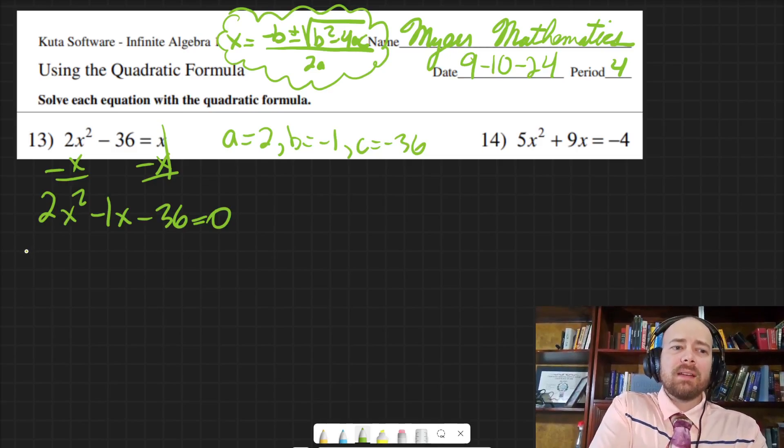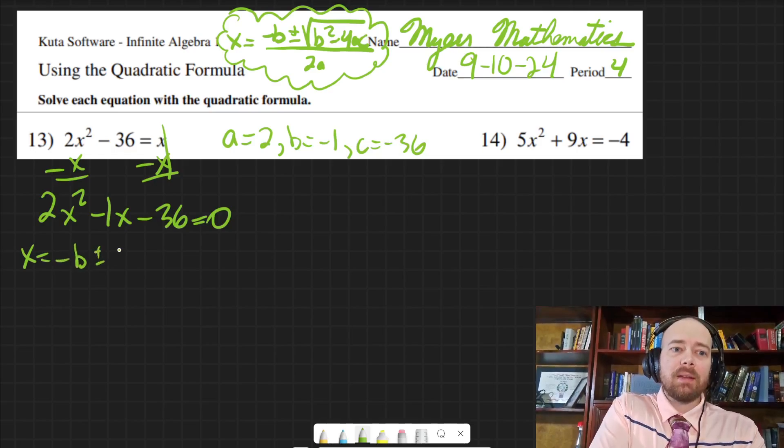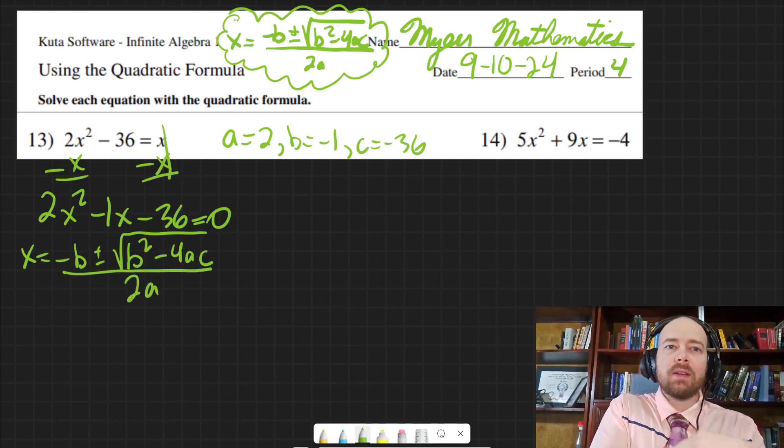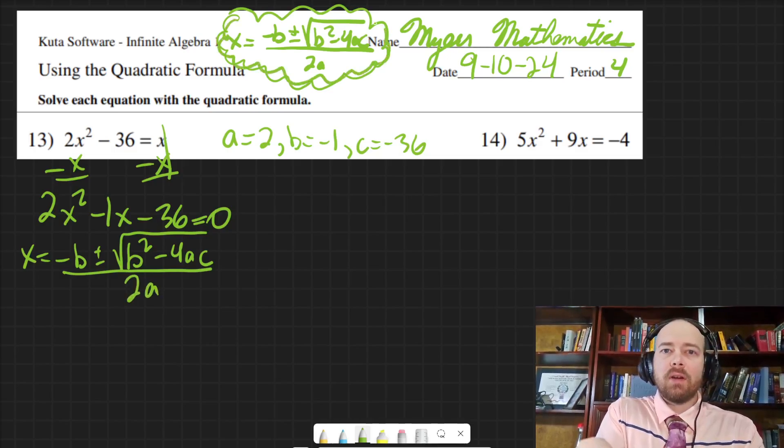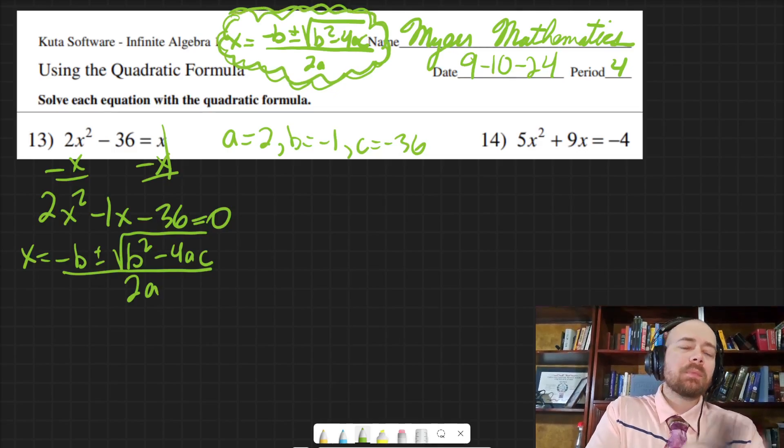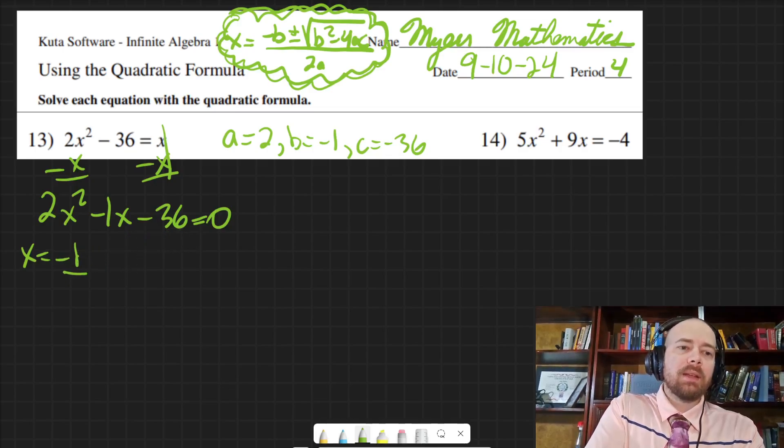And it gives you the practice for it anyways. So that way you can memorize that formula, which is x is equal to negative b plus or minus the square root of b squared minus 4ac, all over 2a. And I have that written up here as well.